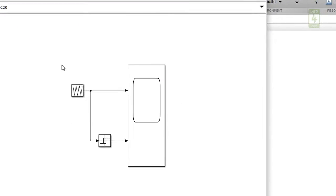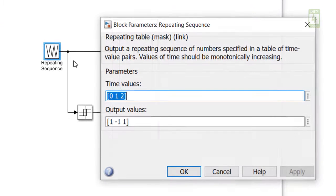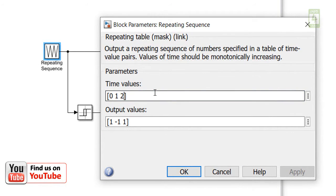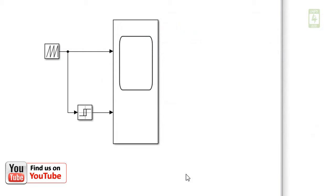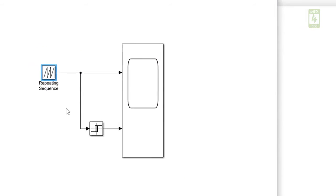Now click on repeating sequence block to update its parameter. Update time value to 0.01 second and output value to minus 1 to 1 and close it. This block will generate our sawtooth wave.